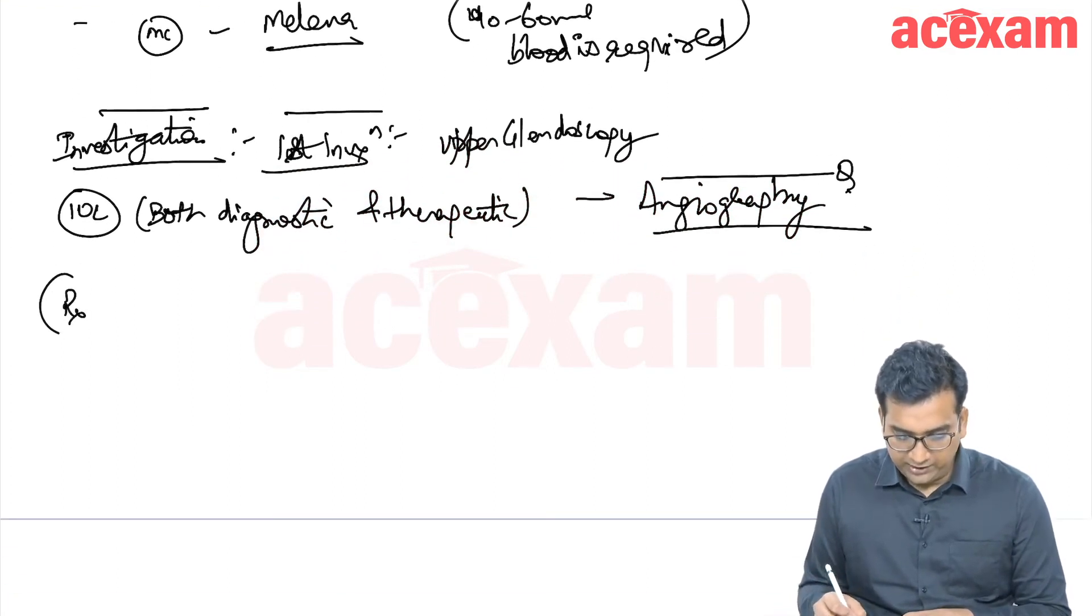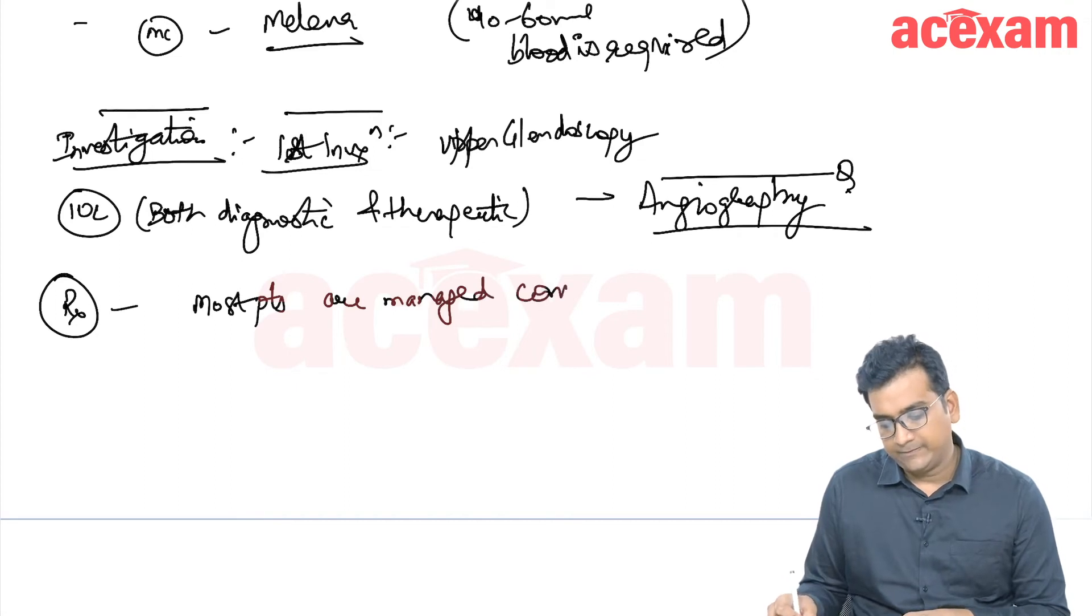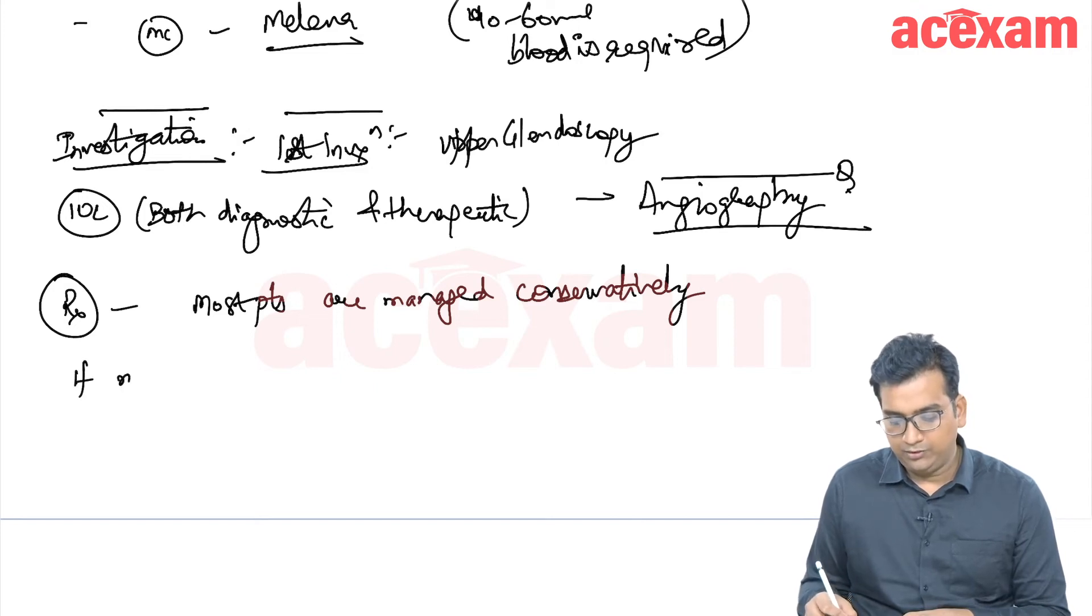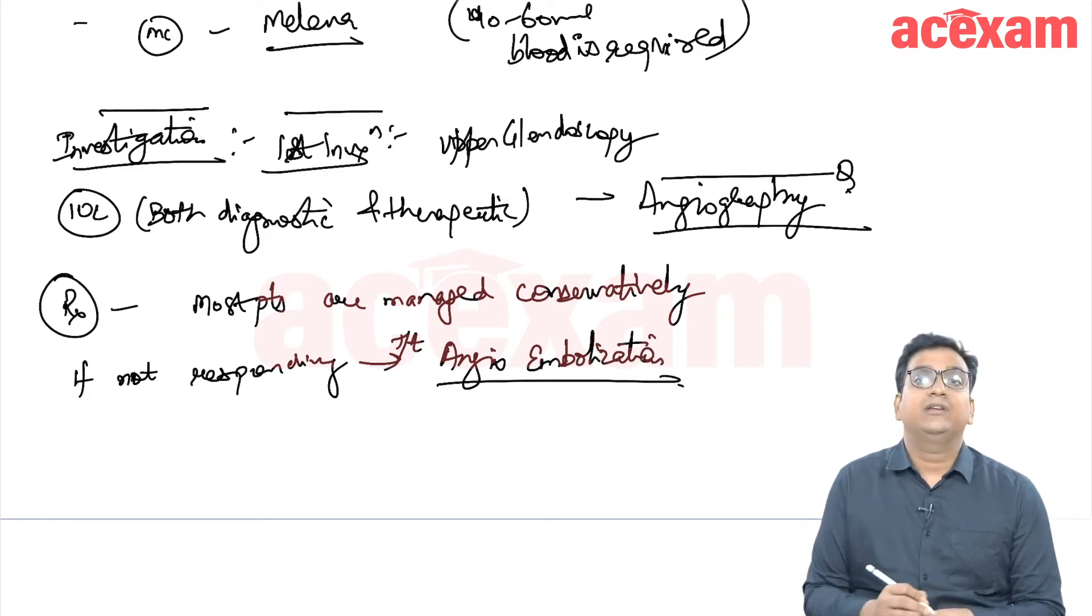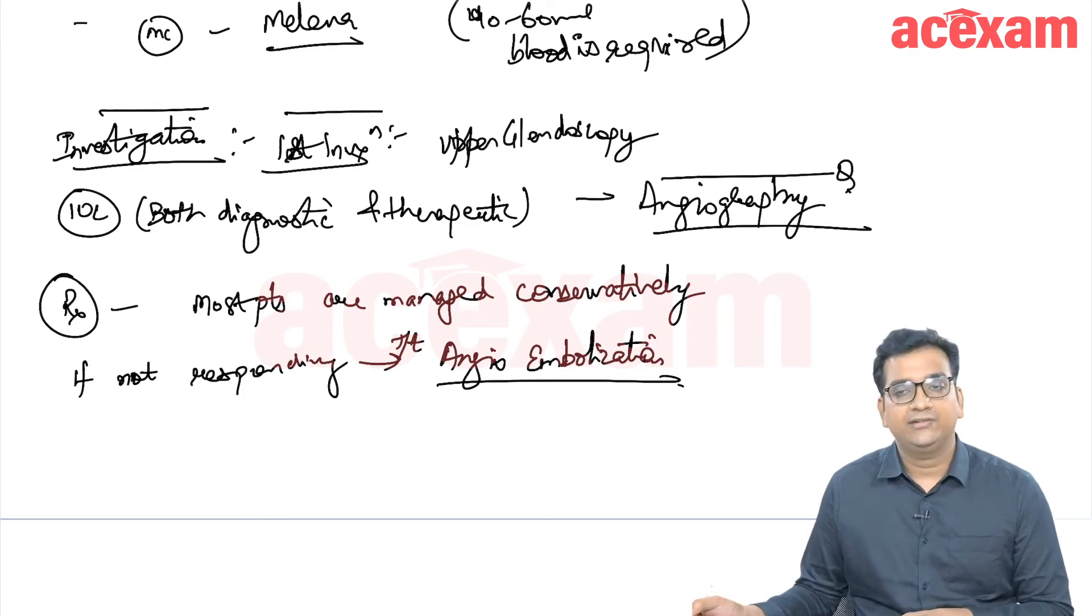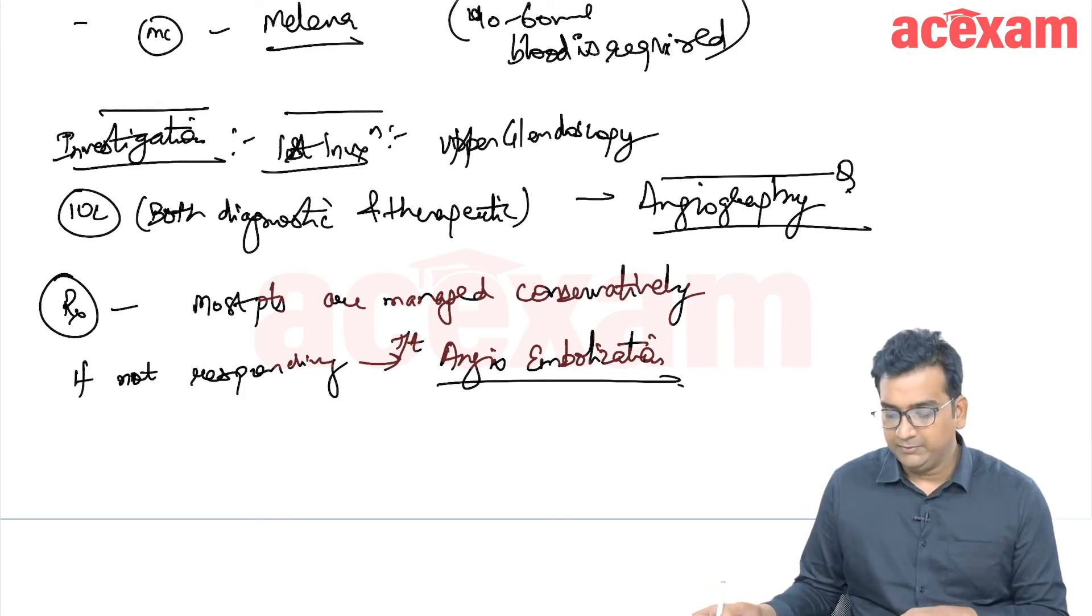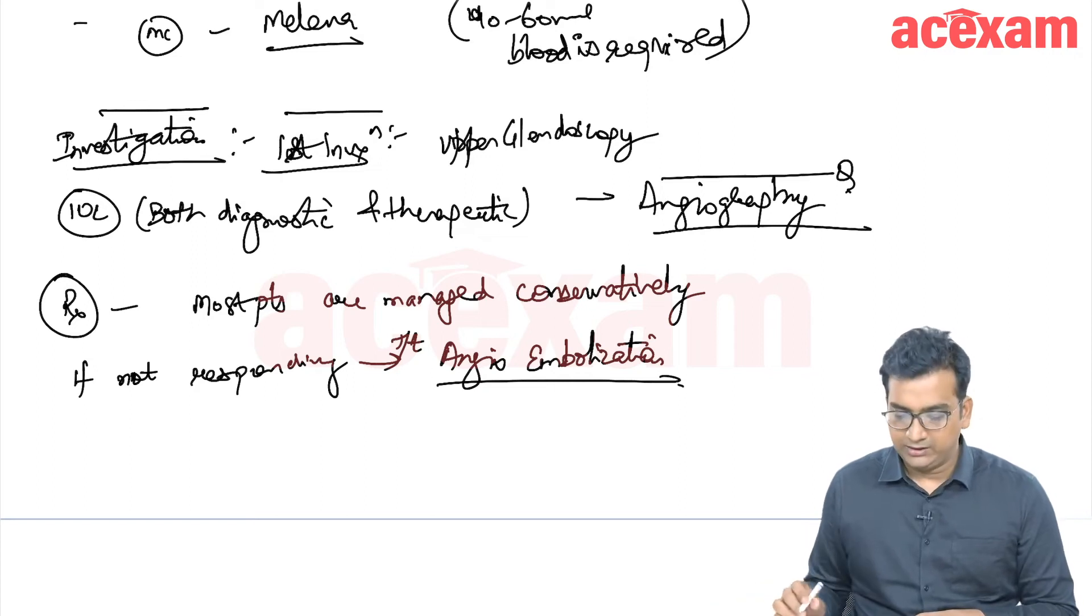Now regarding the treatment part, most patients are managed conservatively. If not responding, then treatment is angioembolization. Majority patient responds to angioembolization. If not responding, we can go with surgical ligation of the bleeding vessel. But the treatment of choice is angioembolization.